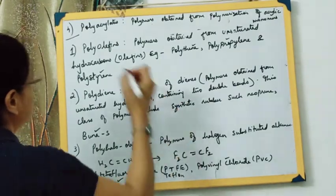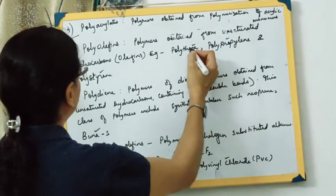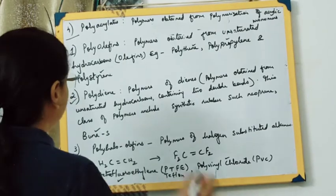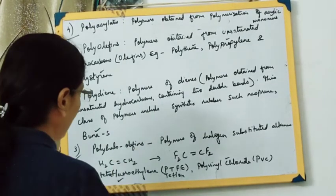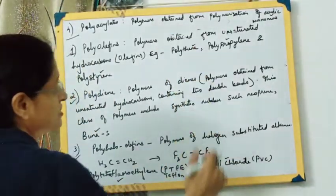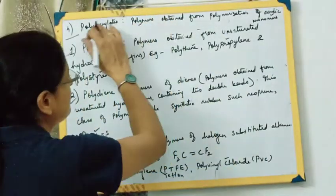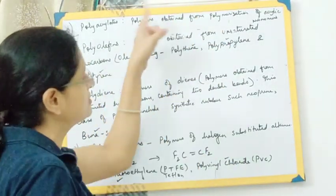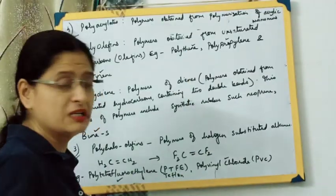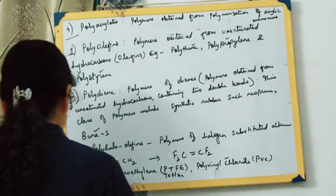So we will be studying from polyolefins: polythene, polypropylene, and polystyrene. From polydienes: Buna-S. From polyhalo-olefins: poly-tetrafluoroethylene and polyvinyl chloride. These are extremely important and frequently asked for one or two marks in exams. Polyacrylates are the fourth type but are not in the required syllabus.